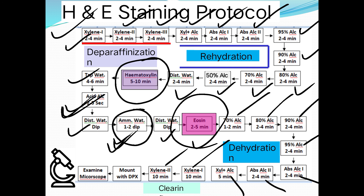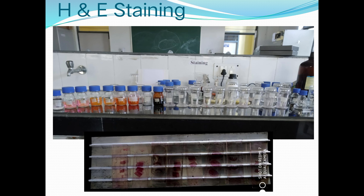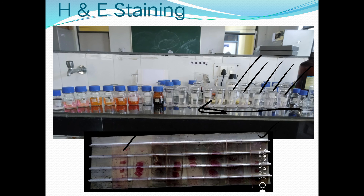Apply a coverslip and allow to dry overnight. This produces a permanent slide that is useful for years. The jars used hold 4 to 5 slides at a time for staining. A tray is used after staining for drying. Chemicals should be kept ready in labeled jars so they can be used immediately when needed.